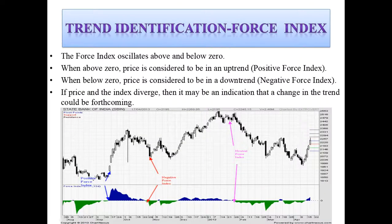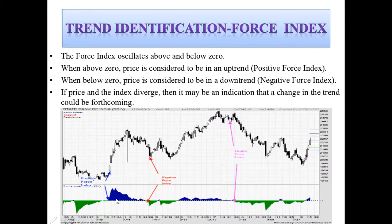Let's look at trend identification using the Force Index. The Force Index oscillates above and below zero. As you can see in this image, we have the chart here, and this is the indicator, and this here is the zero line. This green here indicates bearish moves and this is bullish moves. When it is above zero, the price is considered to be in an uptrend — this is a positive Force Index. This blue portion here is the positive Force Index, and this green portion here is the negative Force Index, considered to be in a downward trend. When the Force Index is below zero, the price is considered to be in a downtrend.